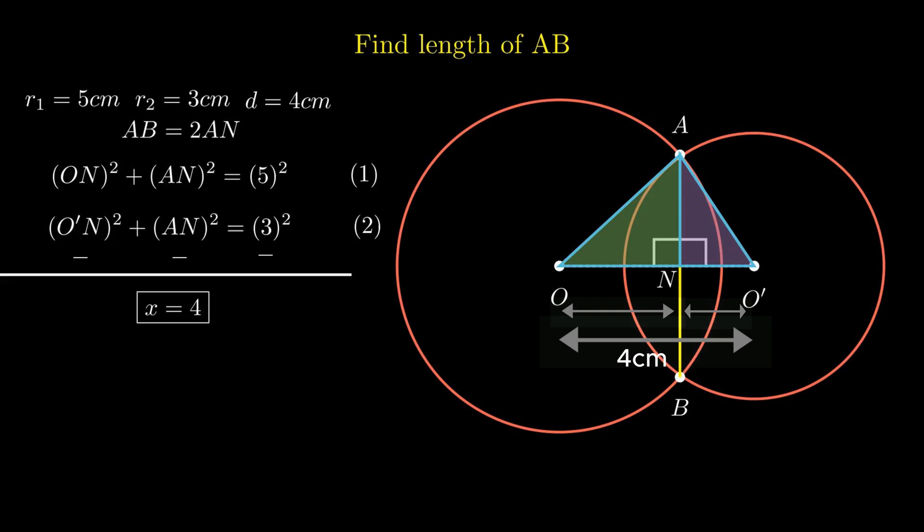Since we need to find the segment AN not ON, we need to substitute X, that is ON equal to 4, in the equation 1 as it contains variable ON and AN.